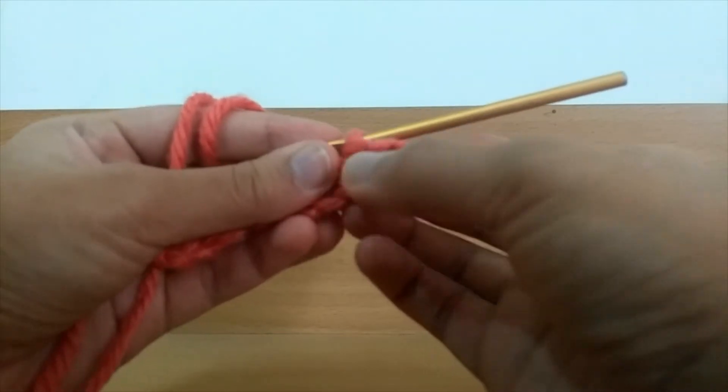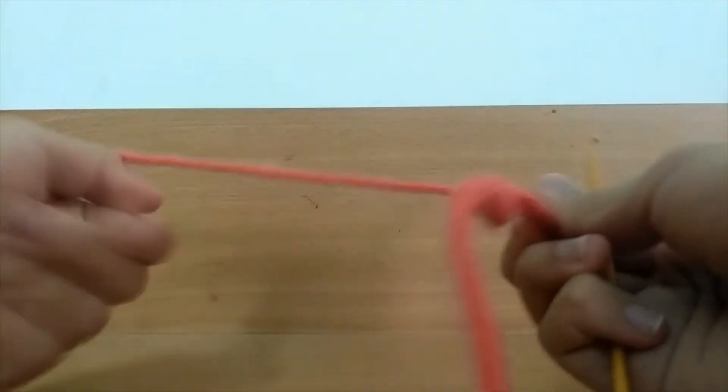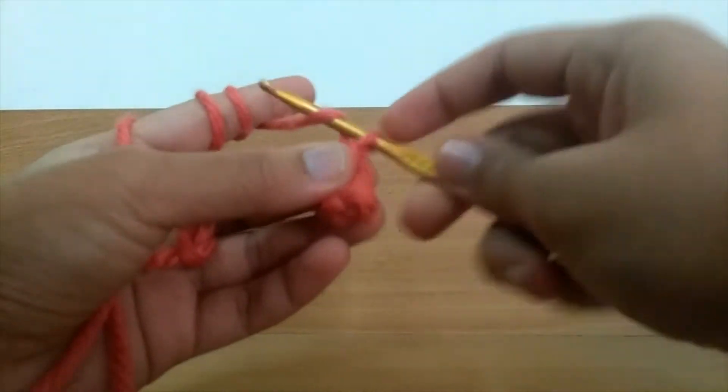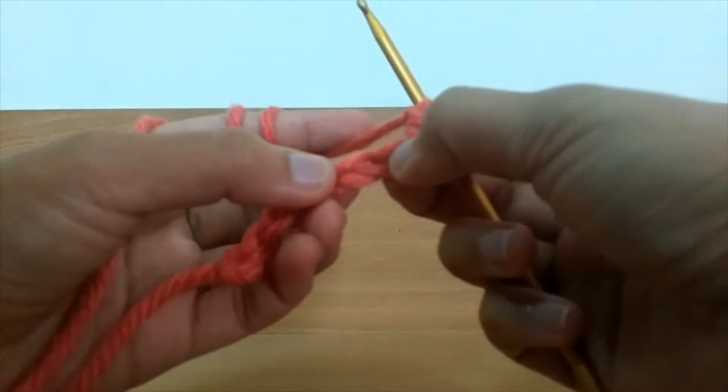You're going to keep going in this pattern, so chain one and then skip this stitch and do a single crochet into the next one.